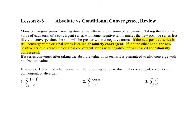Hi, this is lesson 8.6. We have absolute versus conditional convergence. And then in this unit, you also review for the unit 8 test. So now what's happening is that if we take an alternating series or some series that has positive and negative terms, we want to look at that and term them as either absolute convergence or conditional convergence.